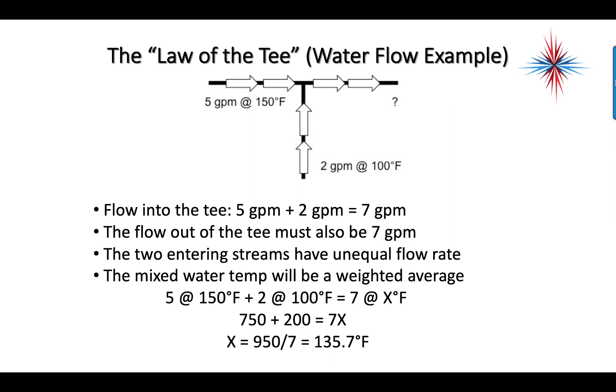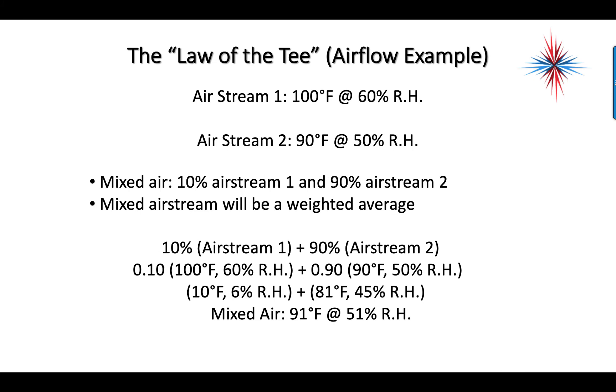Now let's look at airflow, because that's really what we're talking about with psychrometrics. We have airstream one, which is 100 degrees Fahrenheit at 60% relative humidity, and airstream two, 90 degrees Fahrenheit at 50% relative humidity. Our mixed stream is 10% airstream one and 90% airstream two. The mixed airstream has to be a weighted average, just like what we did. So we have to take 10% of our 100 degree, 60% relative humidity air and 90% of our 90 degree, 50% relative humidity air.